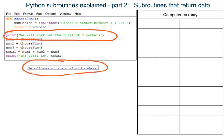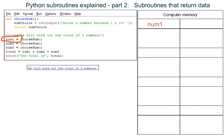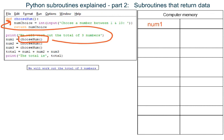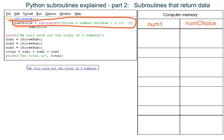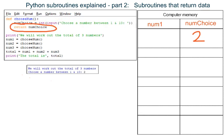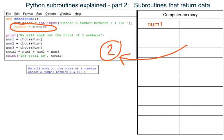This is the order the program runs in. A statement is printed on the screen. The num1 variable is made. Subroutine choose_num is called and Python jumps up the program to do the code in the subroutine. Local variable numchoice is made and an integer is stored in it. Python gets the data out of local variable numchoice, then destroys this variable. Python returns with the data to the place where the subroutine was called and stores the data in the already made num1 variable.